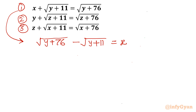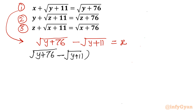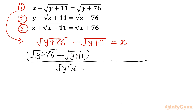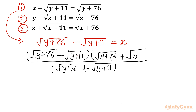How will we rationalize it? I will multiply numerator and denominator with its conjugate. So let me write: square root of (y + 76) minus square root of (y + 11), over the conjugate, which is square root of (y + 76) plus square root of (y + 11). I need to multiply in the numerator also, giving square root of (y + 76) plus square root of (y + 11), equal to x.